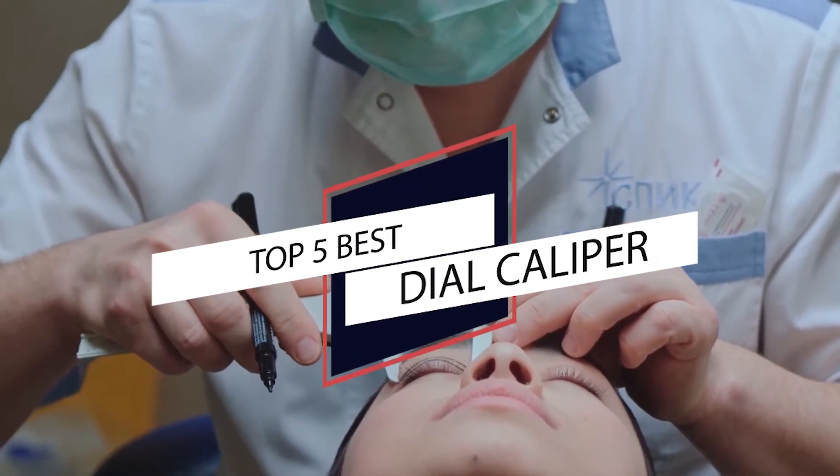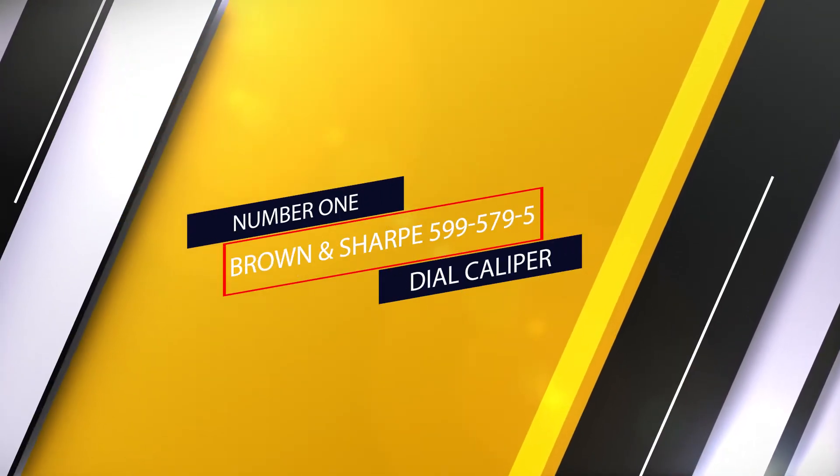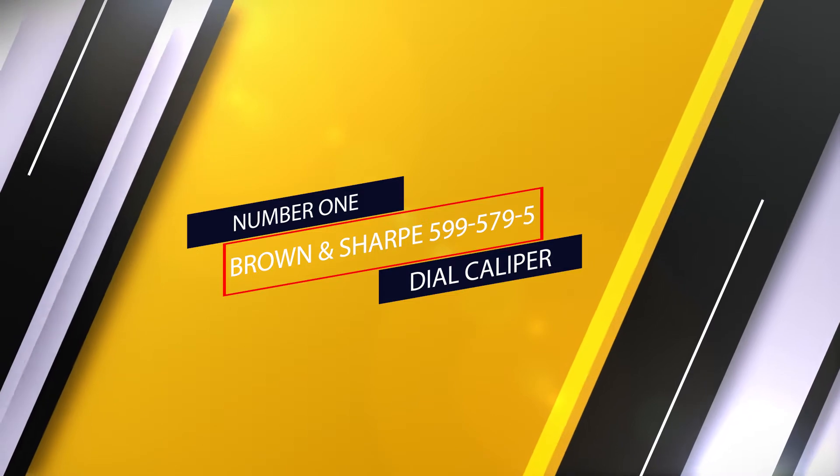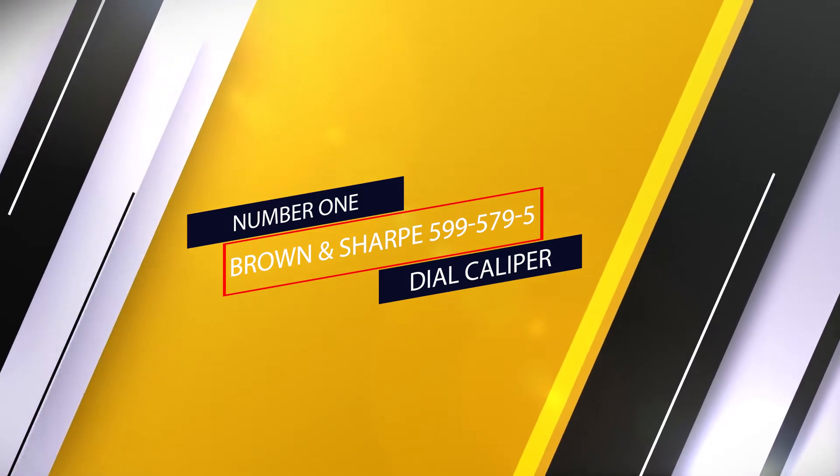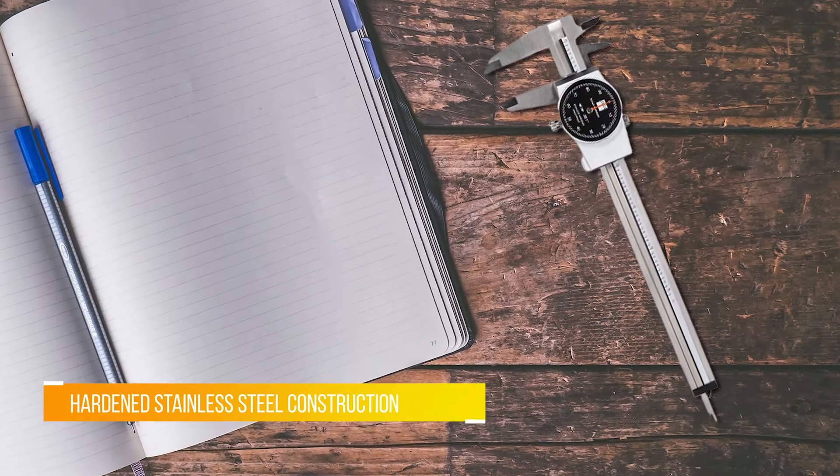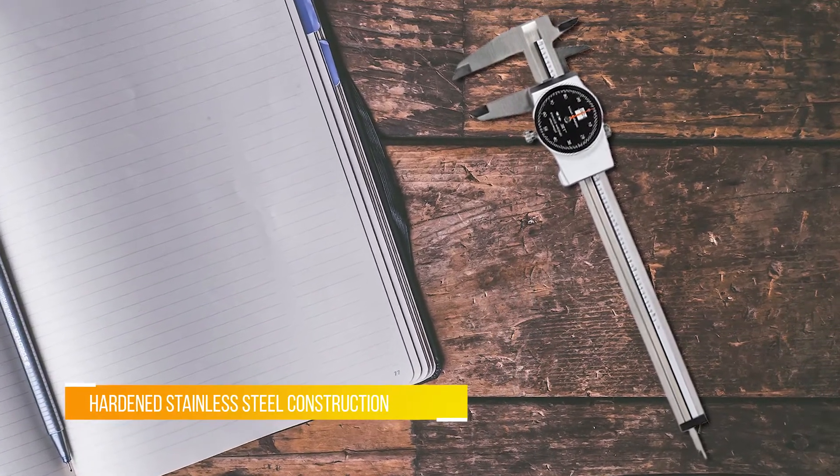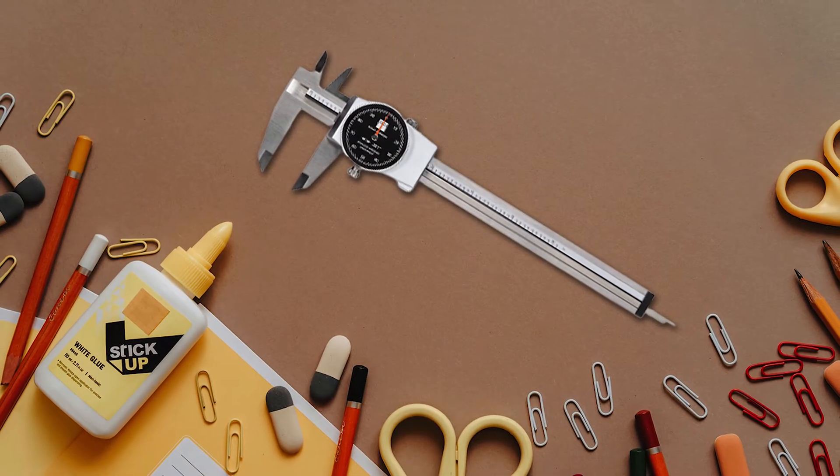If you are looking for the best dial caliper, here is a collection you have got to see. Number one, most popular: Brown & Sharp 599-579-5 dial caliper. The Brown & Sharp 599 dial caliper is available in three different sizes: 6 inch, 8 inch, and 12 inch.